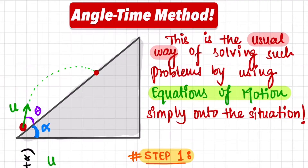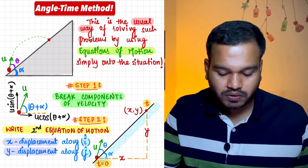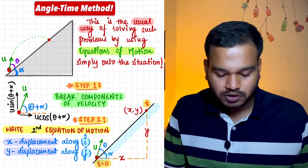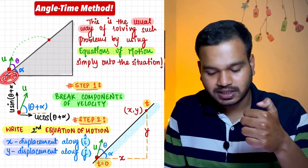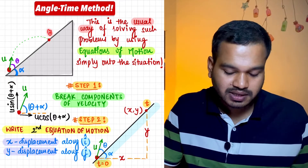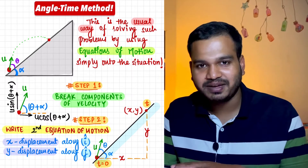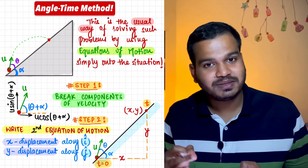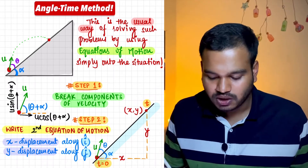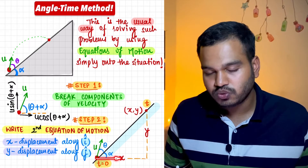This method is called the angle-time method. First of all, we will talk about the wedge angle, which is alpha, and the angle made from the inclined plane. So we have parameters: u (initial velocity of projection), alpha (the wedge angle), and theta (the angle the projection makes with the inclined plane).